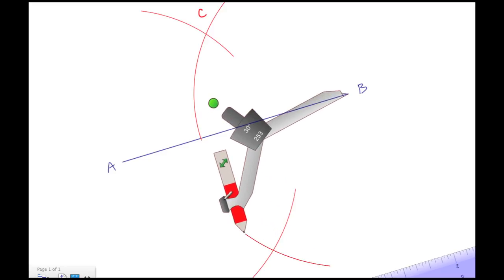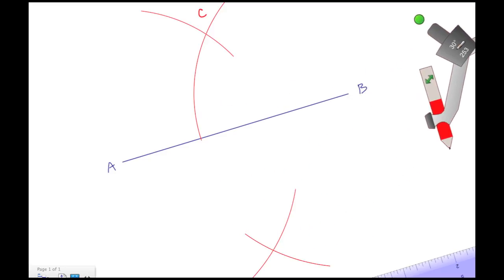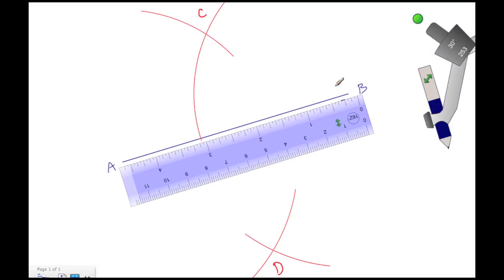another arc, again looking for that intersection. Let's name this intersection here D. Once we have our intersections, we now need to take the straight edge and we need to connect our endpoints to those intersections.